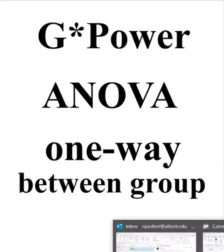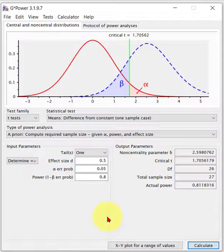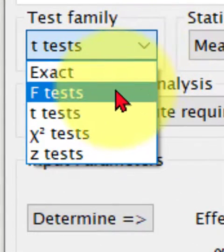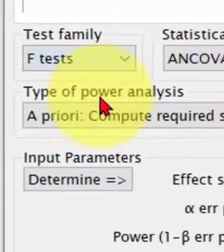So let's pull up our G-Power. To run the ANOVA, the ANOVA is in the F-Test family. There are other F-Tests besides the ANOVA, but that's the main guy here, F-Test.